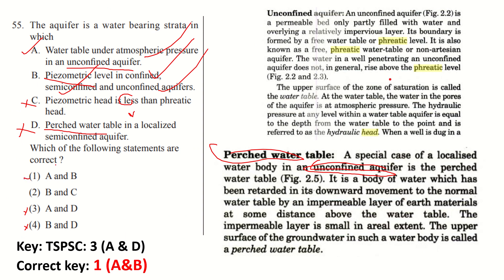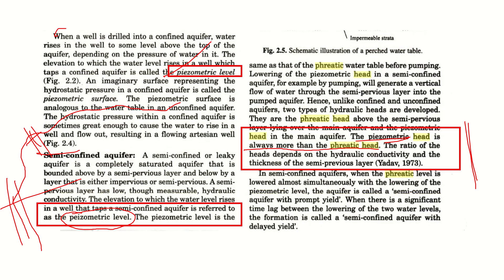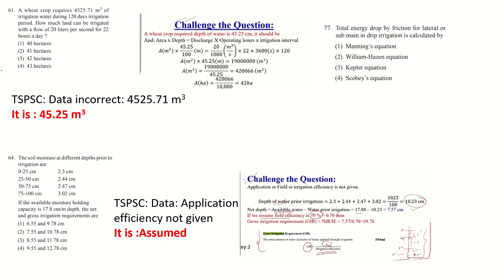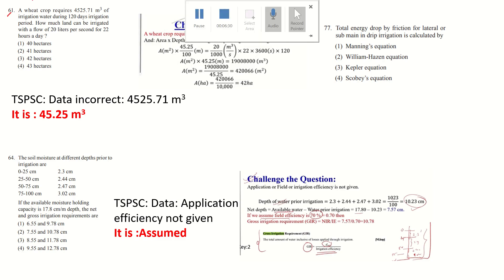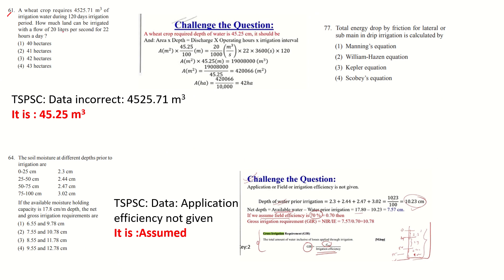The piezometric level indicates the water level in both confined and semi-confined aquifers, and also in unconfined aquifers. So the correct answer is options A and B — that is, key 1. However, TSPSC has given key 3 as the answer. You may challenge this question with these references.